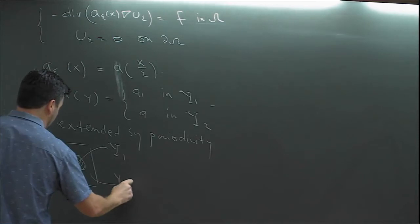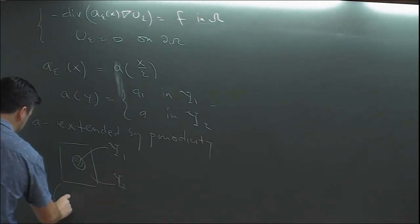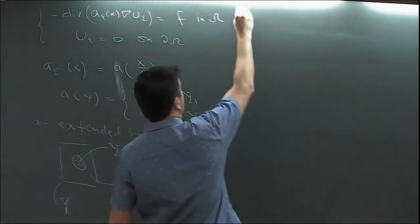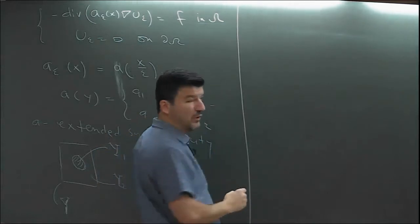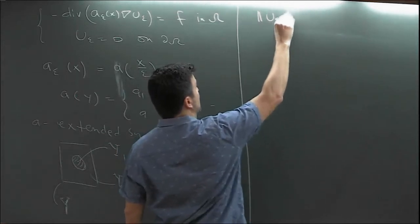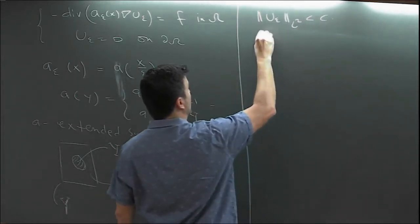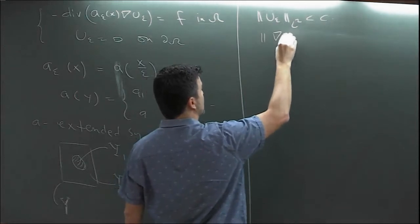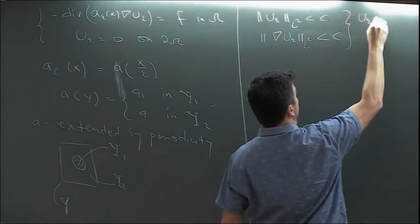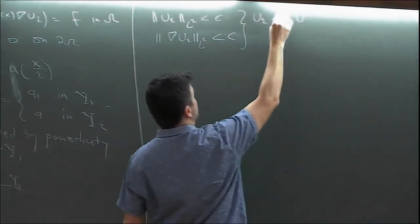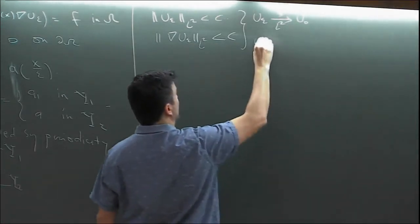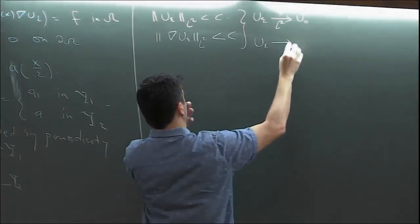The periodicity cell translates and gives the whole microstructure, with y₁ and y₂ denoting material 1 and material 2 respectively, and Y being the full unit cell. That's the problem we considered. We showed that the solution u_ε is bounded in L², also bounded in H₀¹, and concluded from compactness results that the solution has a strong limit in L² and a weak limit in H¹.